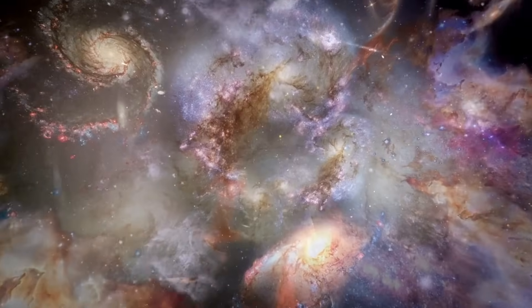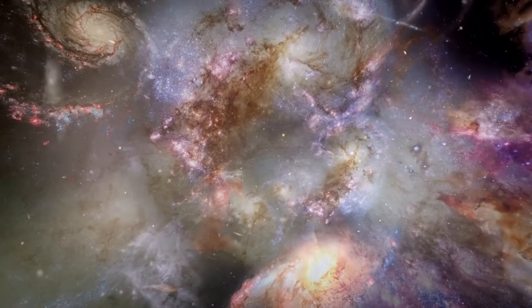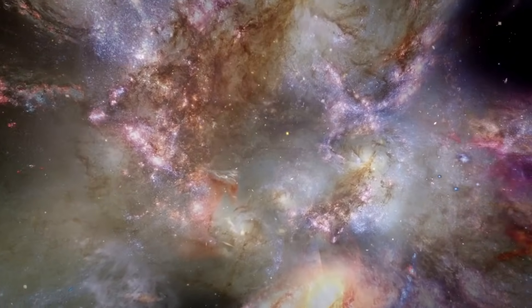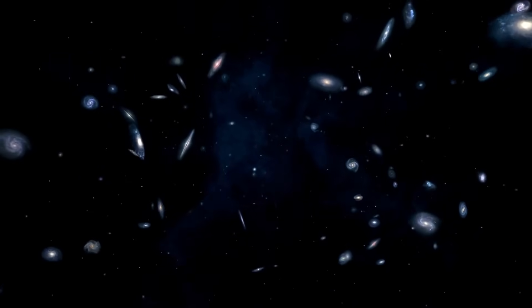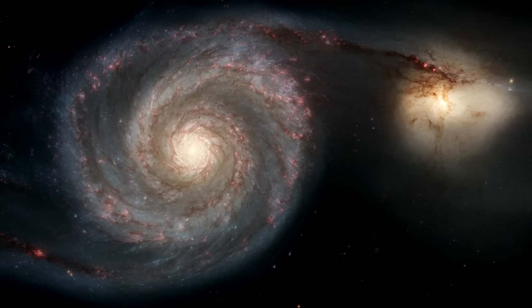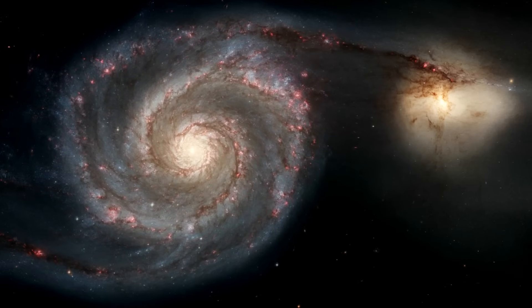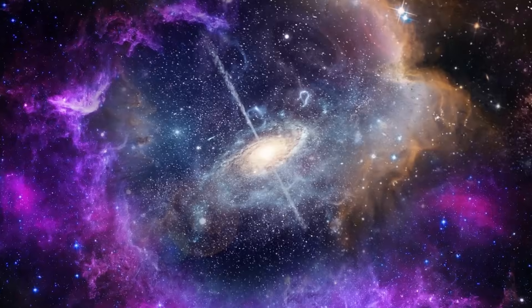In the early universe, gravity was weaker because the matter density was lower and the dark energy was less dominant. This means that galaxies were less bound and more susceptible to external perturbations, such as tidal forces from neighboring galaxies or cosmic shear from large-scale structures.